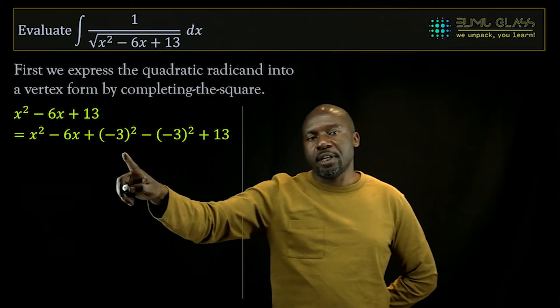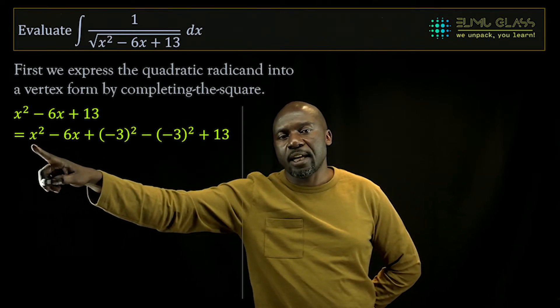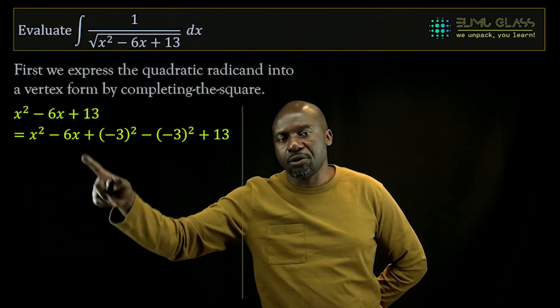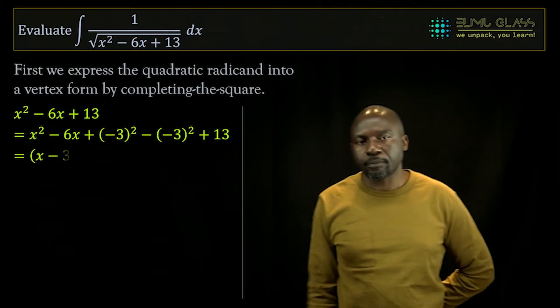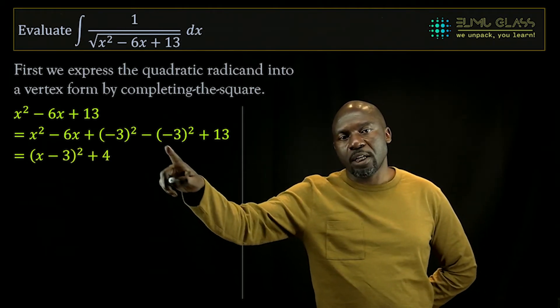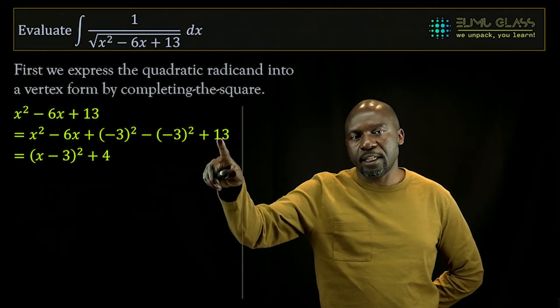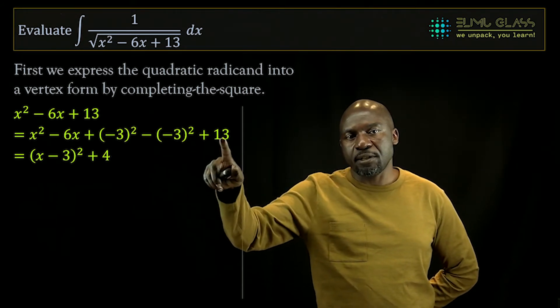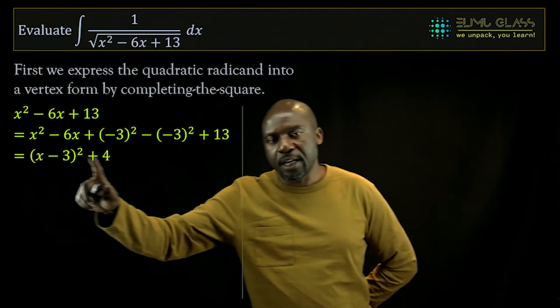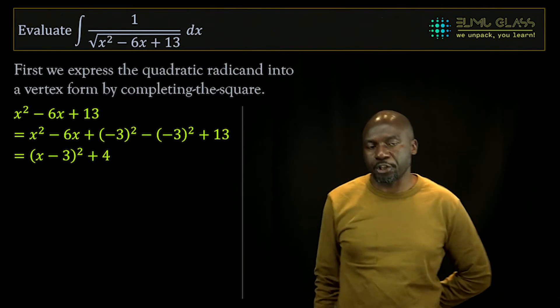When we do this, the first three terms form a perfect square, and we can write this as x minus 3 into bracket squared, and then plus 4 because this is minus 9 and that is plus 13, so negative 9 plus 13 is 4. And this is the vertex form of that quadratic expression.